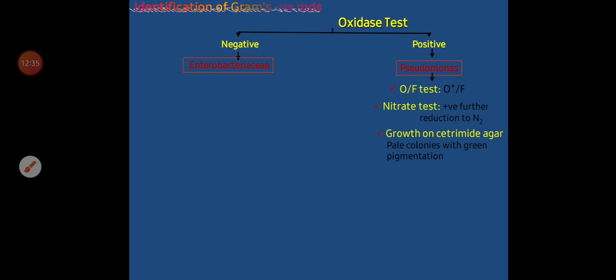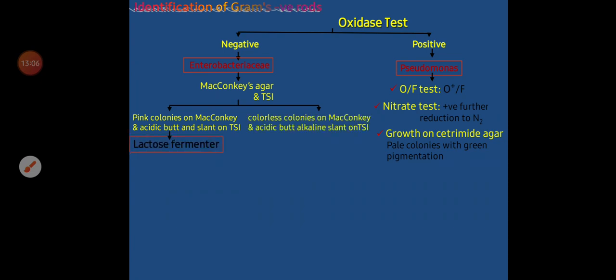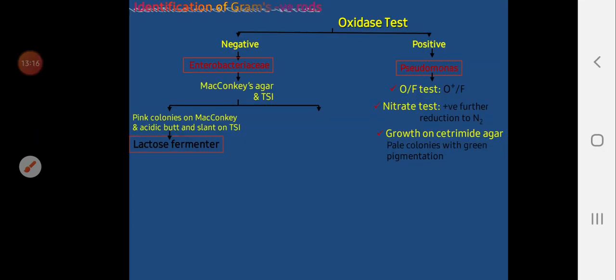If H2S is produced it appears as a black color in the TSI agar. Examples of lactose fermenters are E. coli, Klebsiella, and Enterobacter — these produce pink colonies on MacConkey agar. Non-lactose fermenters produce colorless colonies on MacConkey agar and an alkaline slant with acid butt on TSI agar. The important non-lactose fermenters are Salmonella, Shigella, and Proteus.